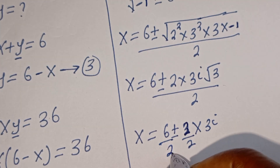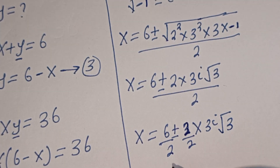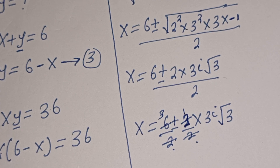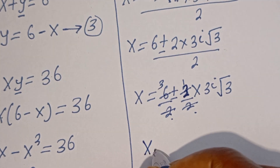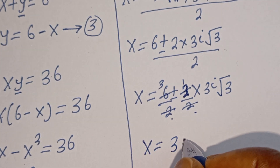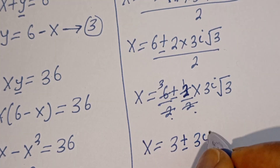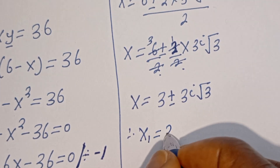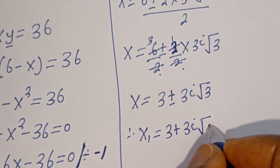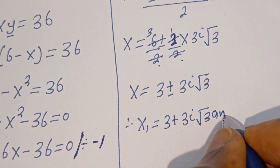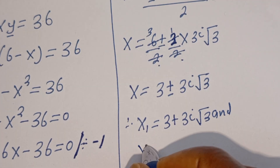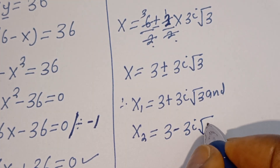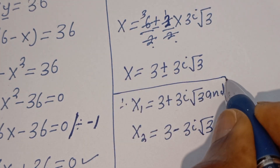Simplifying, the 2 in the numerator and denominator cancel. So s is equal to 3 plus or minus 3i root 3. Therefore S1 is equal to 3 plus 3i root 3, and S2 is equal to 3 minus 3i root 3.